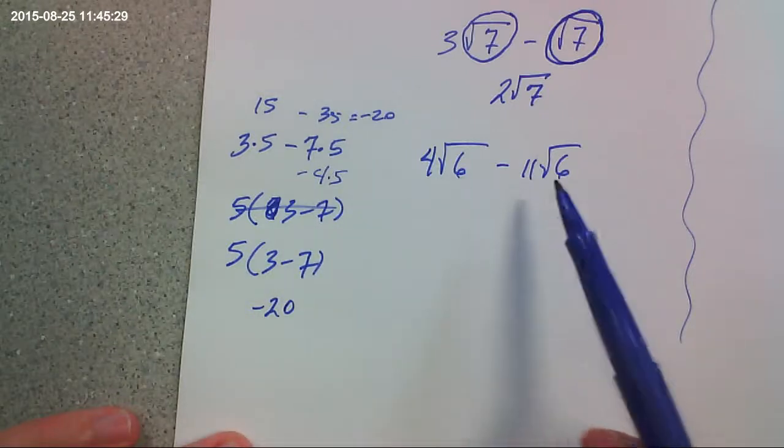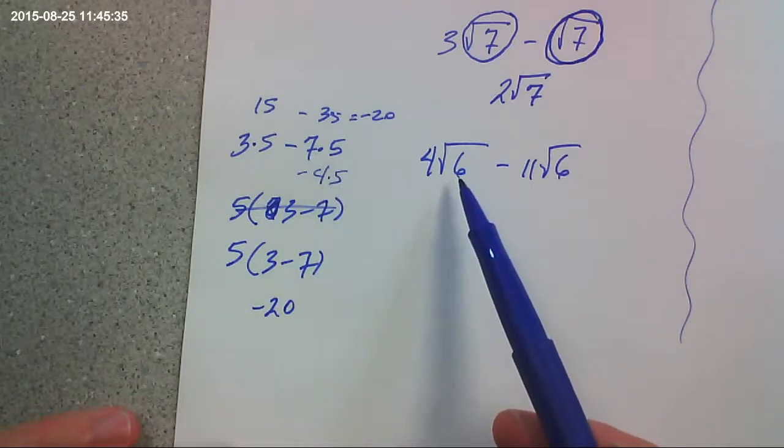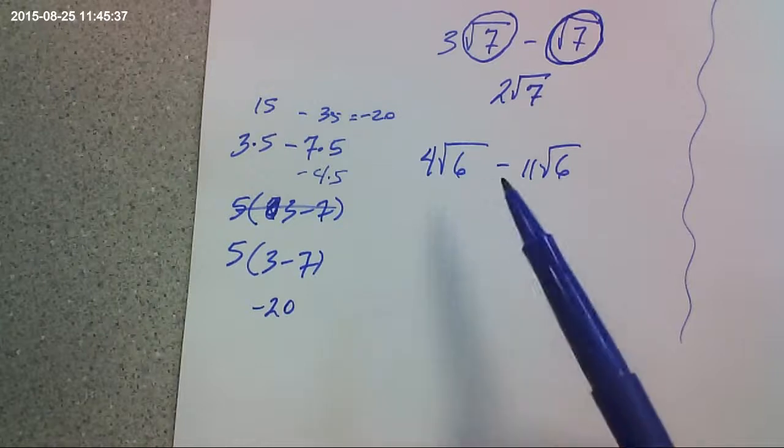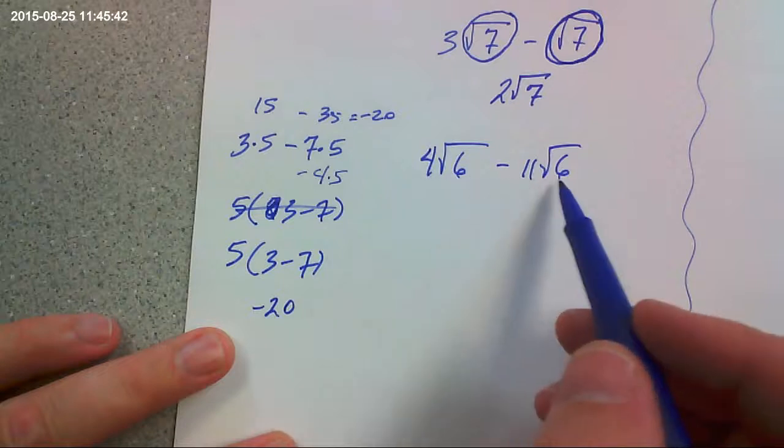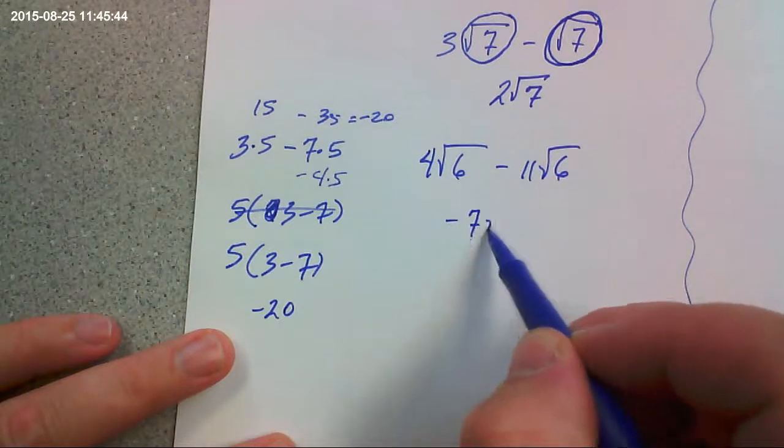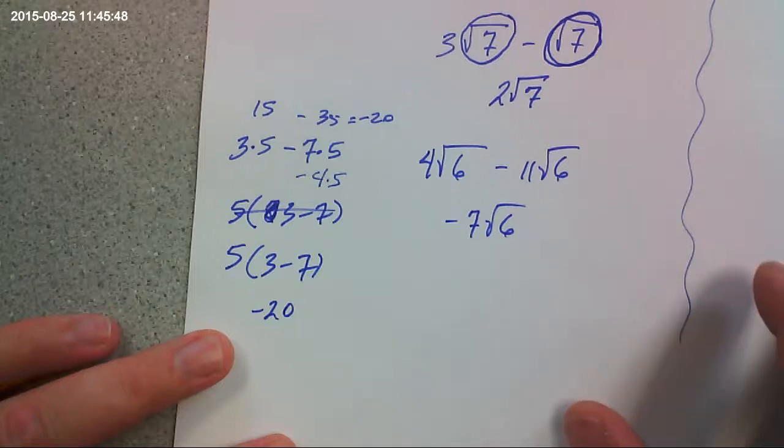We're doing the same thing here. The difference is we know what 5 is. We can do some arithmetic with 5. We can multiply by 5. We can't really multiply by the square root of 6 because it's irrational. You can't write it out. But what we can do is we can say how many of them we have. 4 minus 11, I hope that's negative 7 times the square root of 6. And that's it. That's all you're going to do.